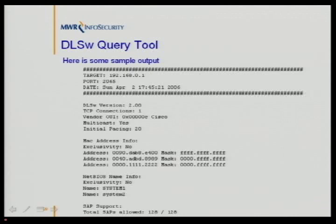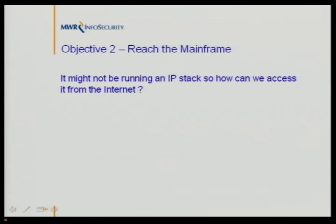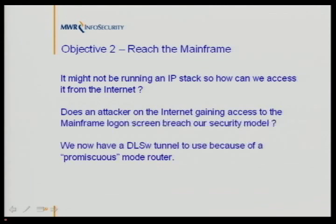Here's a quick look at sample output from the tool: it returns information about MAC addresses, NetBIOS information, and also the vendor of the device — in this case Cisco. If you find DLSW routers, I'd encourage having a play with the tool and seeing what it can tell you. Now our next objective is to actually reach the mainframe. It might not be running an IP stack, so if we're out on the internet, how can we access it? If an attacker gains access to a logon screen, have they breached the security model? We now have a DLSW tunnel we can use because of a promiscuous mode router — a method of encapsulating SNA data in IP across an IP network. If you've placed your DLSW router on the internet, someone may be able to reach your mainframe from the internet.